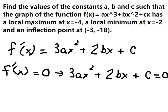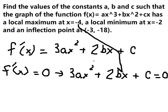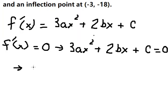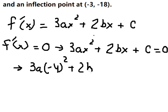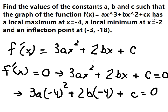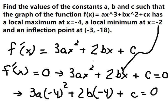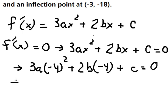We know that the local maximum and local minimum occur at s = -4 and s = -2. Substituting s = -4 into the first derivative equation gives us the first equation. Substituting s = -2 into the first derivative equation gives us the second equation.